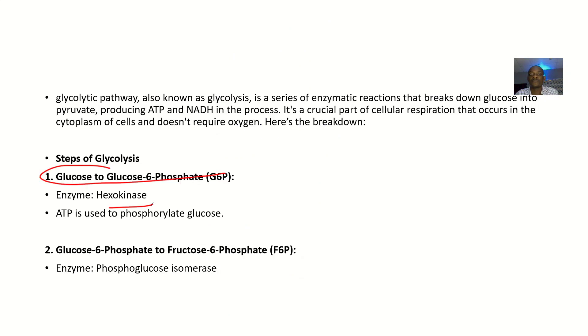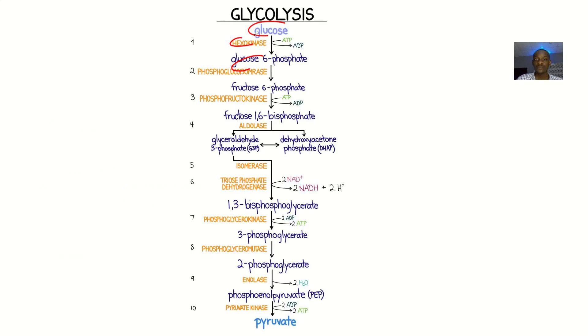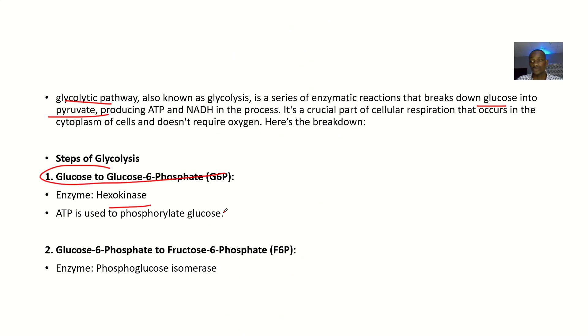Let's have an overview before we kickstart. The glycolytic pathway, also known as glycolysis, is a series of enzymatic reactions that breaks down glucose into pyruvate. It produces ATP and NADH along the process. It's a crucial part of cellular respiration that occurs in the cytoplasm of cells and doesn't require oxygen.